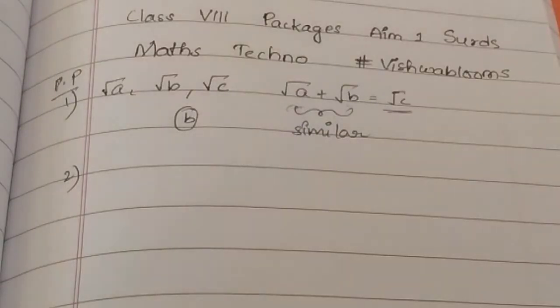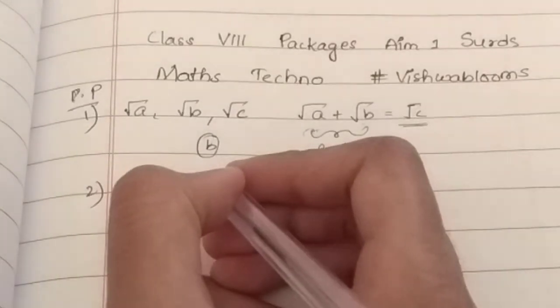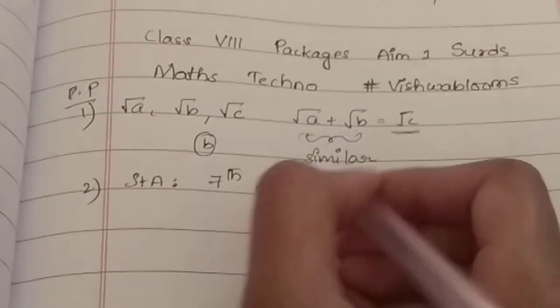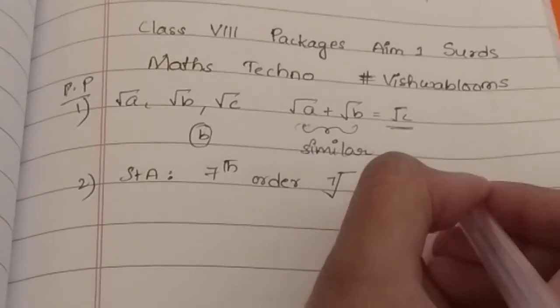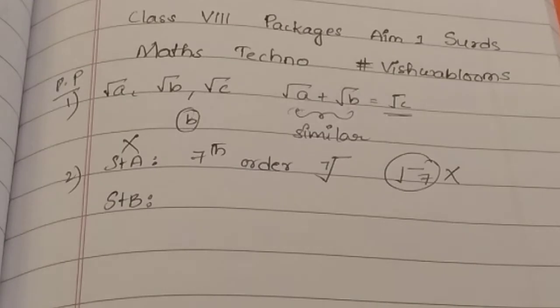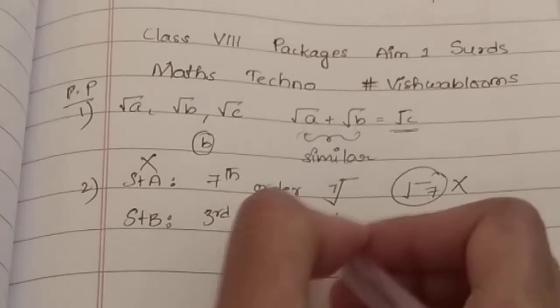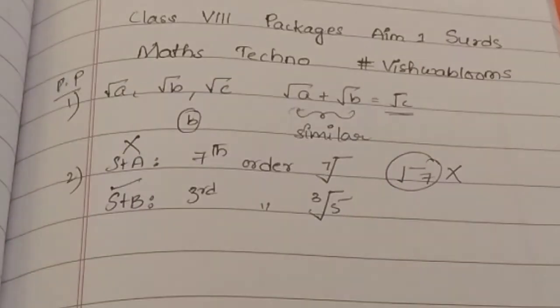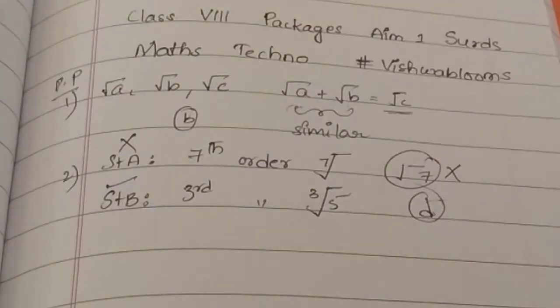Second question is a Statement Type Question. Statement A: Third of Seventh Order is root 7. When seventh order, it should actually be written this way. But in the statement, they told it like this. So this is wrong, right? So Statement A is wrong. Next, we will look at the second statement. That second statement says that surd of third order is in this way. Yes, that is correct. So the surd is of the third order. So what is the option? It is D. That is, A is wrong and B is correct.